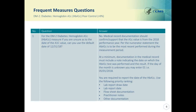The question was: for the DM2 diabetes hemoglobin A1C measure, if you are unsure as to the date of the A1C value, can you use the default date of December 31st, 2018? We researched this in the measure specifications and the answer is no. Medical record documentation should confirm and support that the A1C value is from the 2018 performance year. Per the numerator statement, the HbA1C is to be the most recent performed during the measurement period. At a minimum, documentation must include a note indicating the date on which the test was performed and the result.